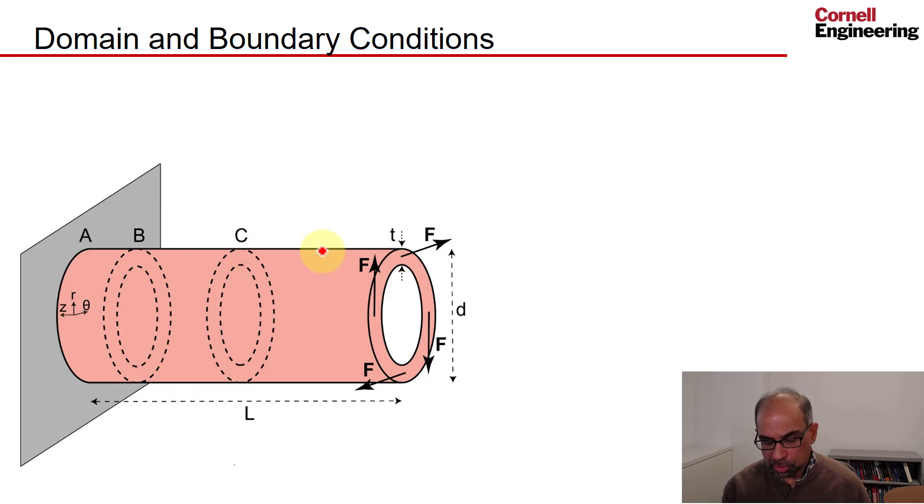The domain is the volume defined by our hollow cylindrical shaft because the governing equation is saying that every little chunk in that volume has to be in equilibrium. And so we have essentially three surfaces: a left surface, a right surface, and then the lateral surface.